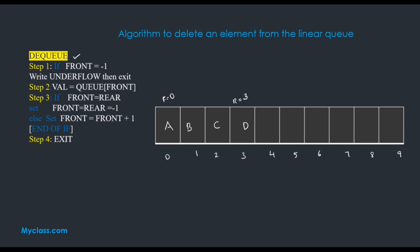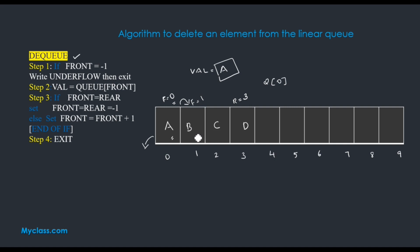In step 2, if something is in the queue we can only delete from the front side. We save Q of front — Q of 0 contains value 'a' — into our variable. Then we want to change the front or rear value. The normal case is to increment the value of front, because we are deleting element 'a'. So front becomes 1. One other case exists: if only one element remains, front equals rear. At that point we want to delete the element and set both front and rear to minus 1. Otherwise the normal condition is front equals front plus 1.